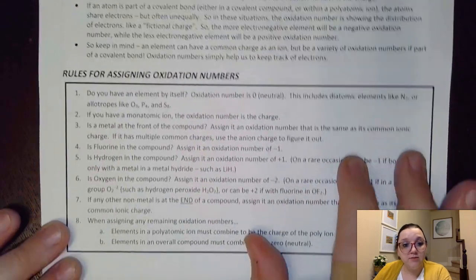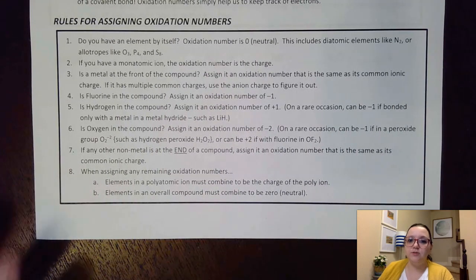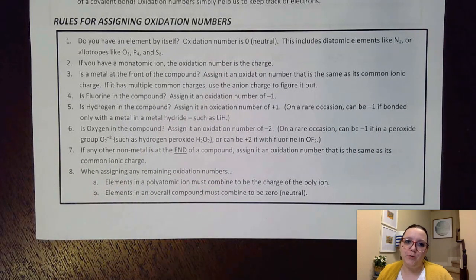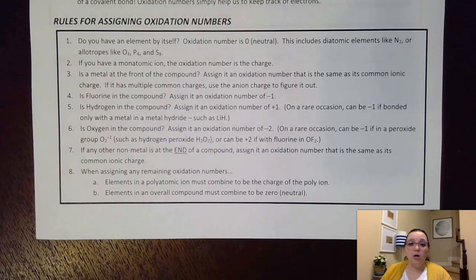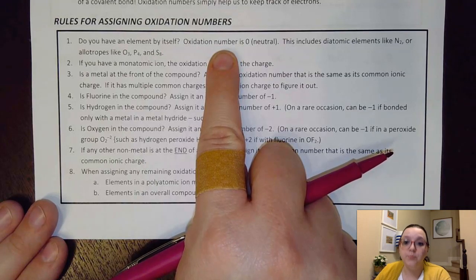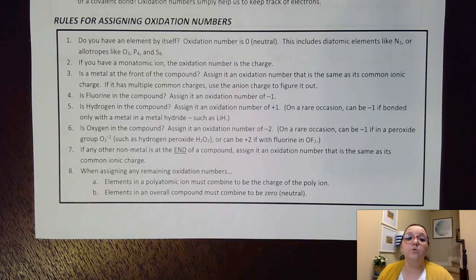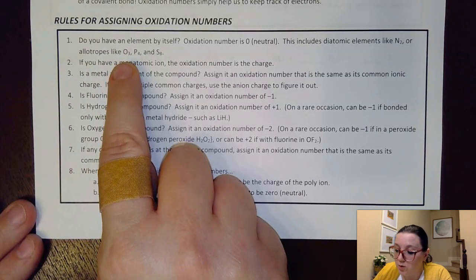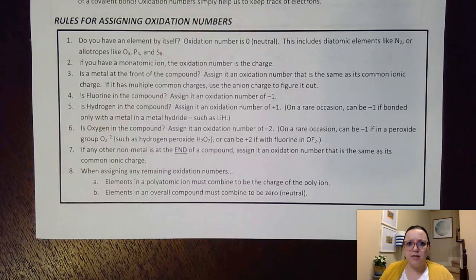We have some rules for assigning oxidation numbers. First, if we have an element by itself not shown with any kind of charge, we assume it's neutral and the oxidation number is zero. This includes diatomic elements, so N2, O3, P4, and S8 all have an oxidation number of zero.